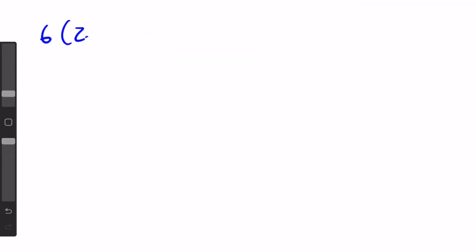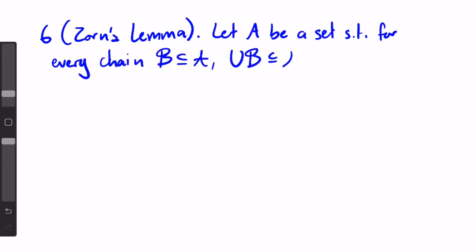And finally, form six of the axiom of choice is known as Zorn's Lemma, and this one is a little more complicated. It states, let a be a set such that for every chain b, which is a subset of a, the union of b is also in a. Then, a contains a maximal element m, where m is not a subset of any other set in a.